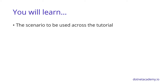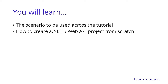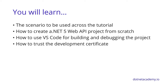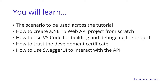In the first part of this tutorial, you're going to learn the scenario to be used across the tutorial, how to create a .NET 5 web API project from scratch, how to use Visual Studio Code for building and debugging the project, how to trust the development certificate installed by .NET 5 for HTTPS access, and how to use Swagger UI to interact with the API.